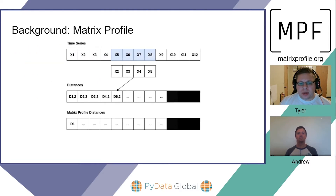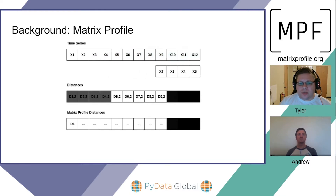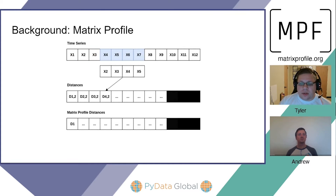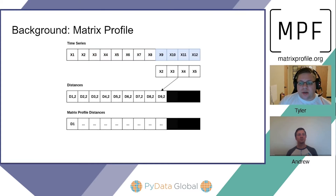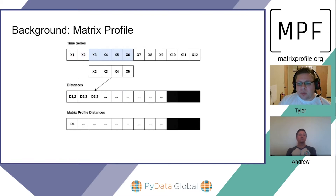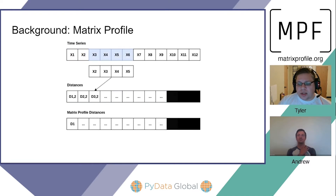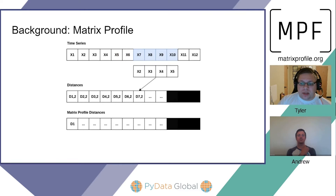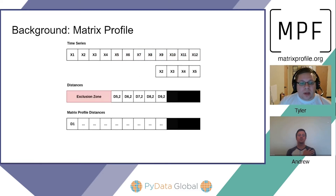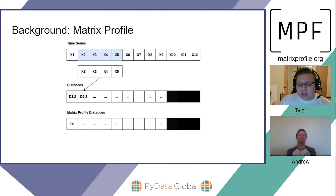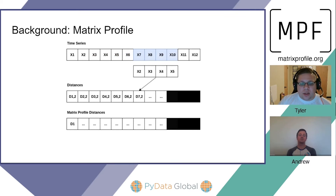Just some background on the Matrix Profile. This illustration will give you an idea of how it's computed. The distances are based on z-normalized Euclidean distance. Values closer to zero represent similarity, whereas values further from zero mean they're dissimilar. In this example, we're computing distances across the time series starting at the second sub-sequence. Once all distances are computed, an exclusion zone is applied to avoid trivial matches, and the minimum distance is captured as the Matrix Profile distance. The exclusion zone avoids a trivial match — that is, a match on itself or something very similar in that region.